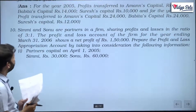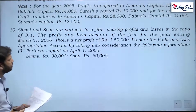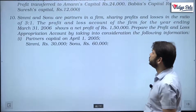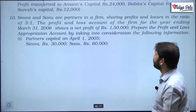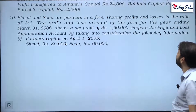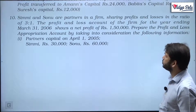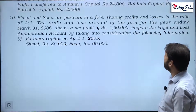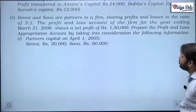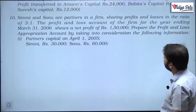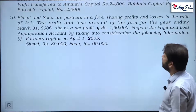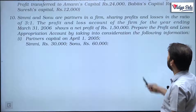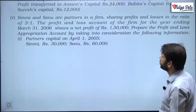Simi and Sonu are partners in a firm sharing profits and losses in the ratio of 3 to 1. The profit and loss account for the firm for the year ending 31st March 2006 shows a net profit of rupees 1 lakh 50,000. Prepare the P&L appropriation account taking into consideration the following information.